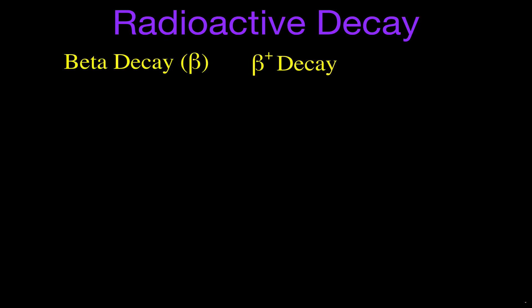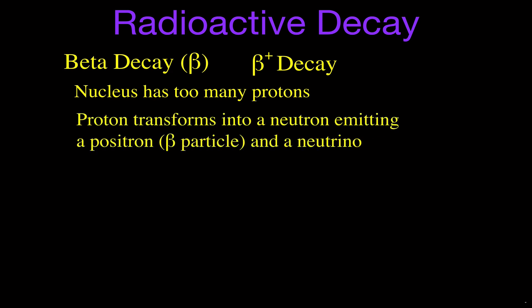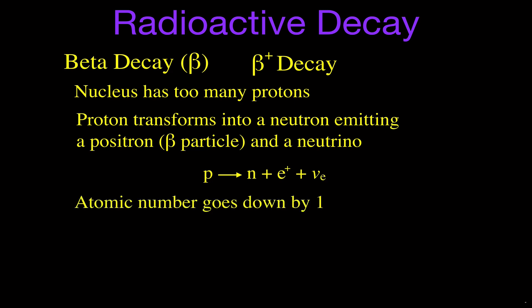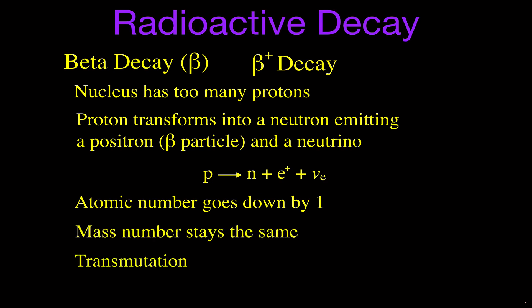Now we have beta plus decay — kind of the opposite. It occurs when the nucleus has too many protons, so a proton transforms into a neutron, and when that occurs it emits a positron and a neutrino. The previous one was an electron and an anti-neutrino, but with beta plus it's a positron and a neutrino. We write a proton into a neutron, E with a plus for the positron, and the Greek letter nu with an E for the electron neutrino. The atomic number goes down by one, but the mass number stays the same — again, a transmutation.